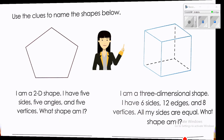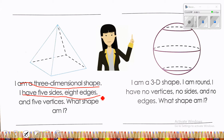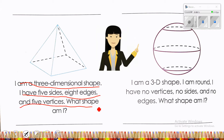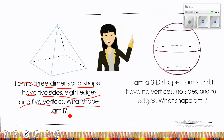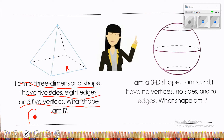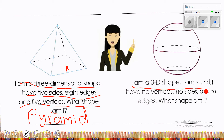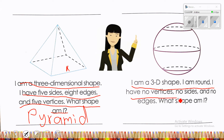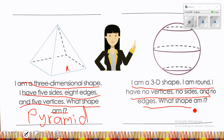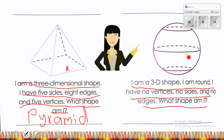Let's continue. I am a 3D shape. I have 5 faces, 8 edges, and 5 vertices. What shape am I? Perfect — it's a pyramid. Next: I am a 3D shape. I am round. I have no vertices, no faces, and no edges. What shape am I? It looks like a ball. Perfect — it's a sphere.